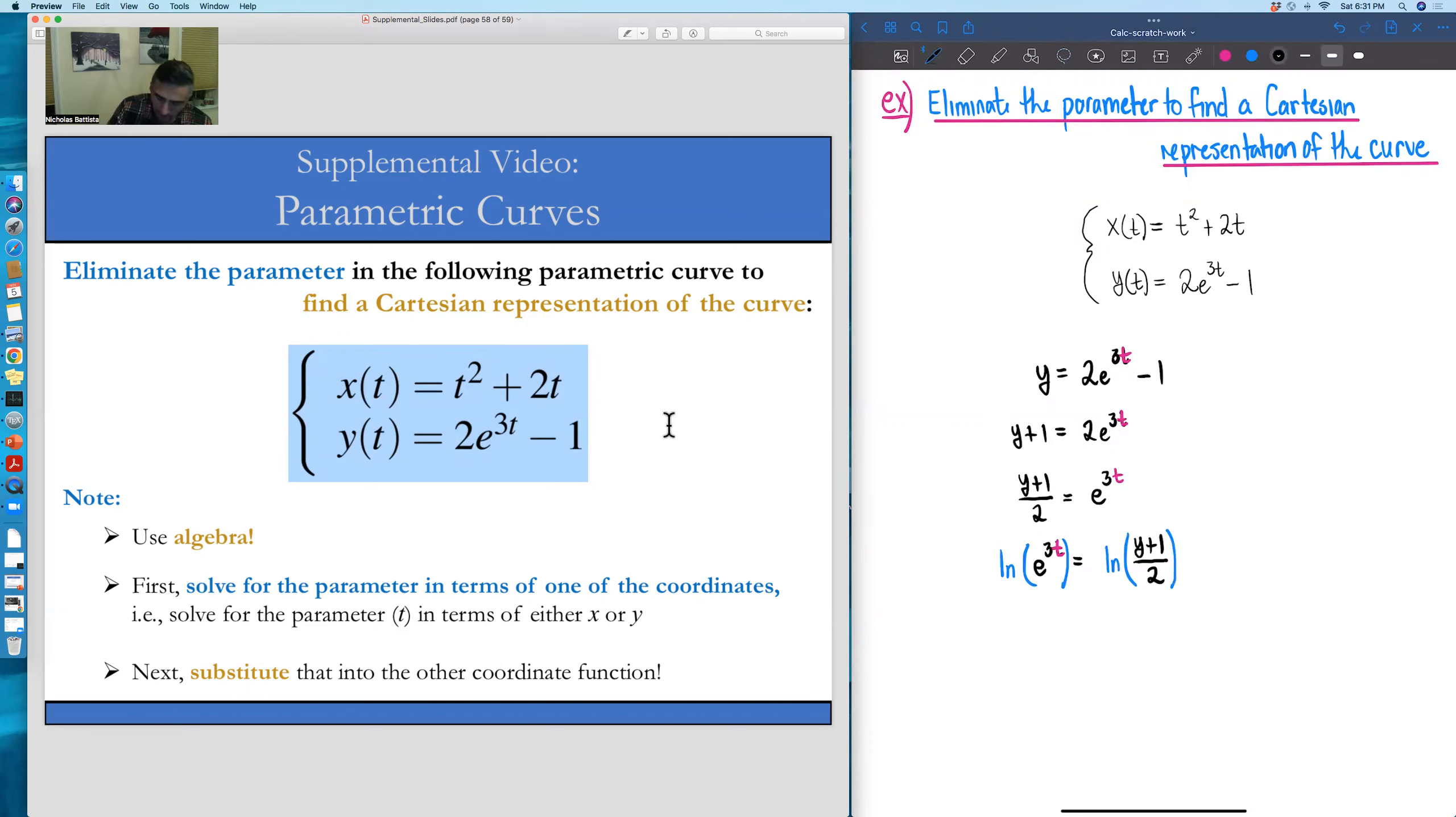And what that will do is since the ln, or natural log, is the inverse function of the exponential with base e, this left-hand side, we're actually just going to get 3 times t.